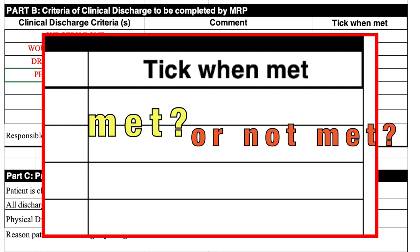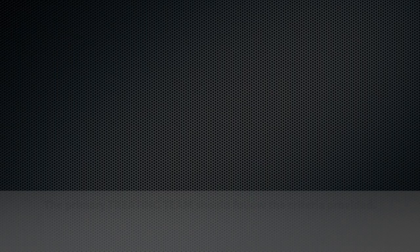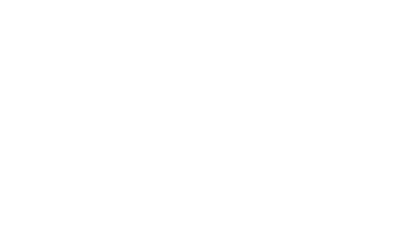In addition, the name of the responsible person should be written at the bottom of Part B. Please note that after the MRP writes all the criteria for discharge, the primary treating team should follow the criteria provided.